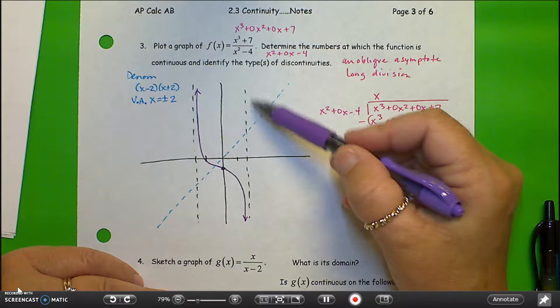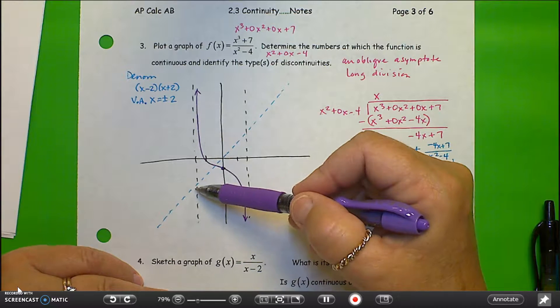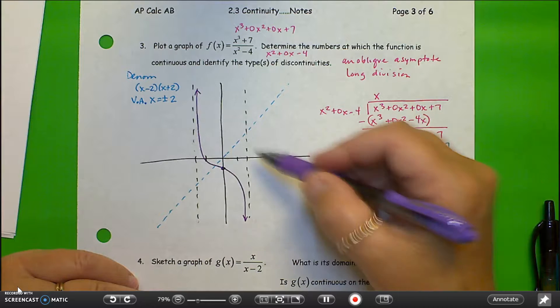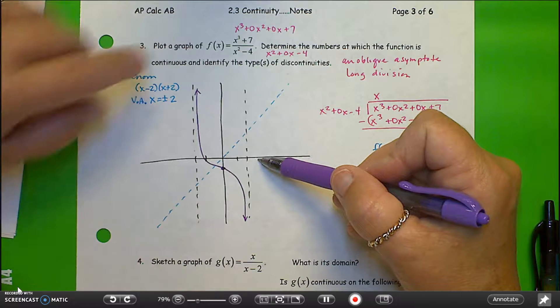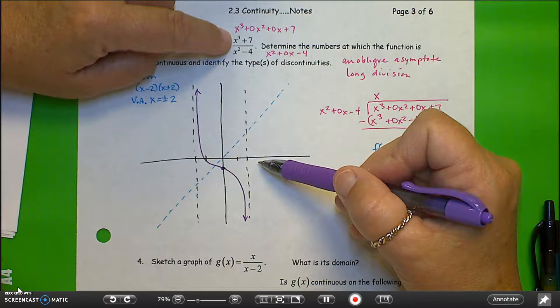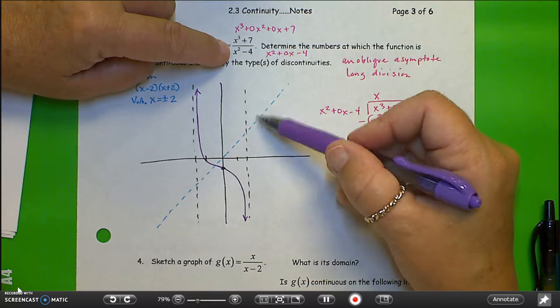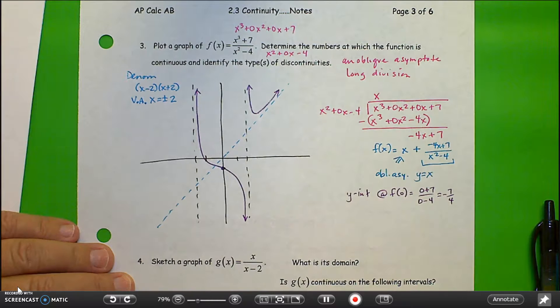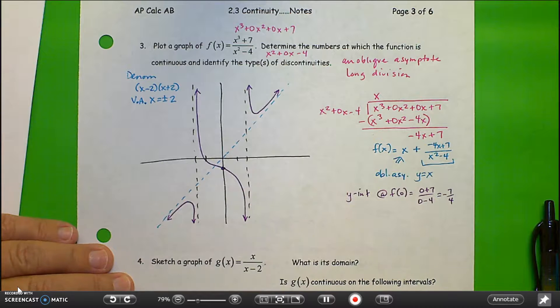For the remainder of the graph, you could do limits from the right of positive 2, limit from the left of negative 2. Or you could just plug in a value to make sure we know where this is going. If I plug in a value of 3, I'm going to get a very large number, 27 plus 7 is 34 over 5. So I'm going to be up in this zone. This graph shows up here. And you could do a similar thing and show that graph shows up right there. So this is my graph.